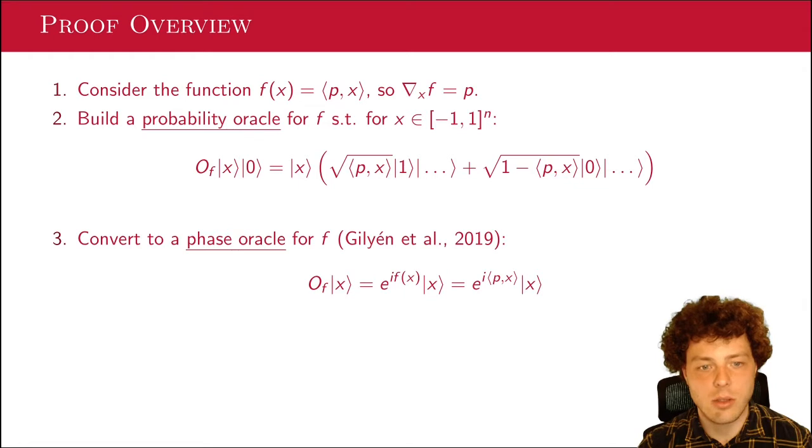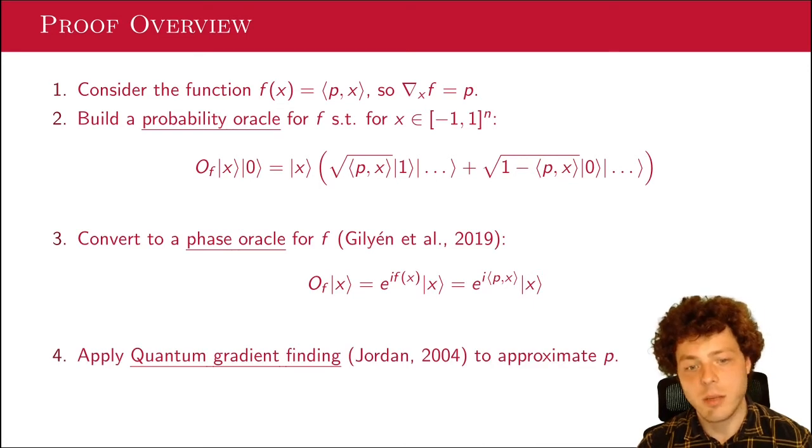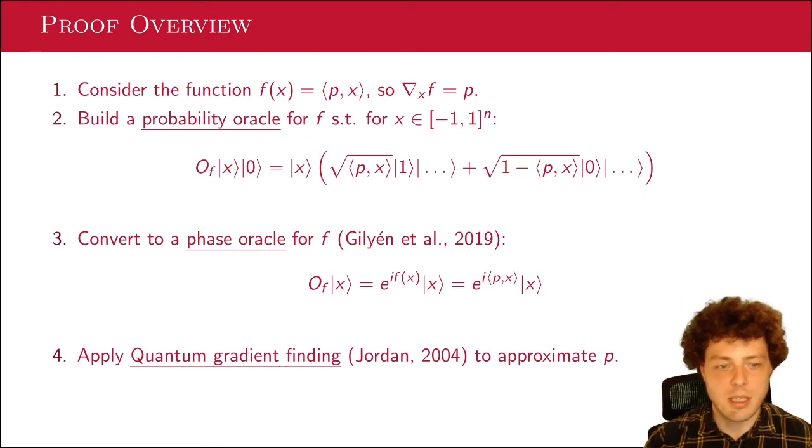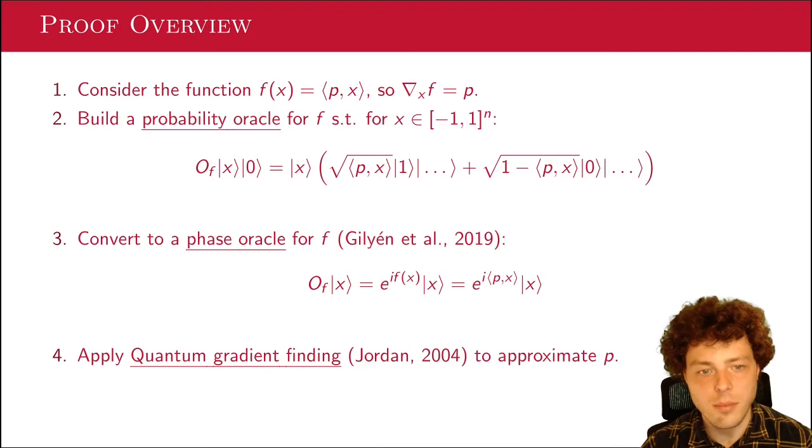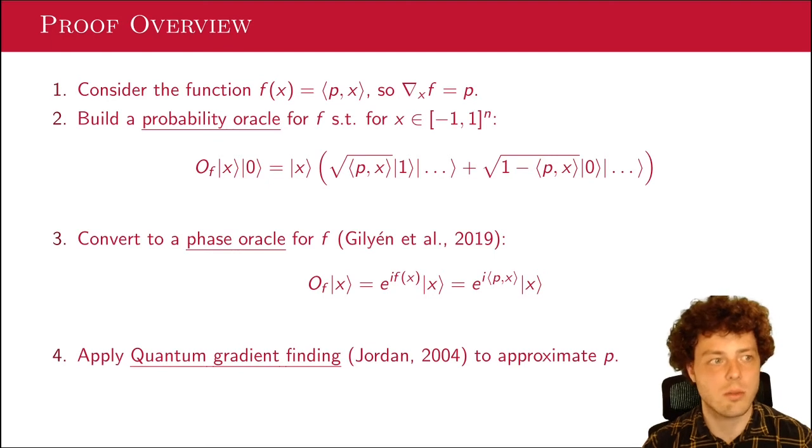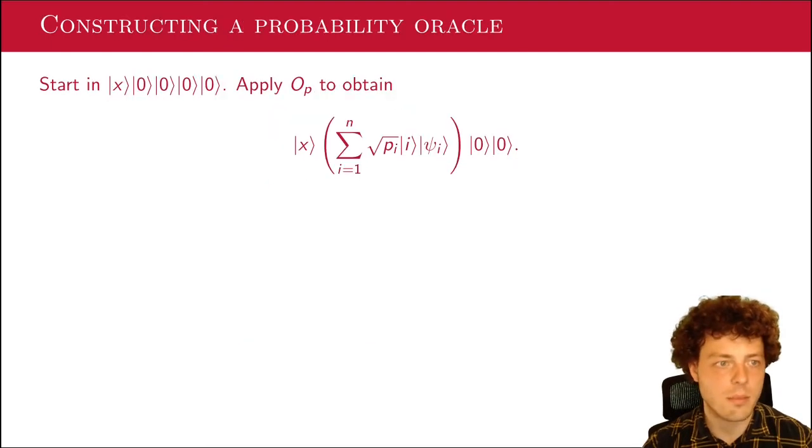So here, that just means that we want something that has square root of the inner product of P and x in front of something with ket 1 and something behind, and then we don't care about the second part of that state, plus something with one minus this inner product in front of ket 0. This is a probability oracle, and I'll show you in a bit how to build actually such a probability oracle for f just using our normal oracle. And then we'll actually use a ready result, a lemma from Gilyen et al from 2019, that shows us how we can convert this into a phase oracle for f.